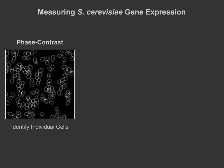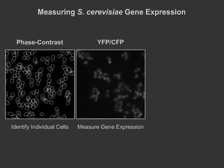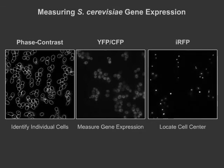Typical experiments last for about two hours and we take pictures every five minutes. Phase contrast imaging first allows us to identify individual cell boundaries. We can also use fluorescent reporter proteins such as CFP and YFP that glow whenever the promoter gets activated. This is how we measure how much the gene is being expressed — the more active the promoter is, the more the cell will glow. Finally, we use infrared fluorescent protein, known as IRFP, which we engineered to be in the nucleus, to help us identify the center of cells.